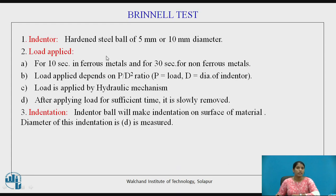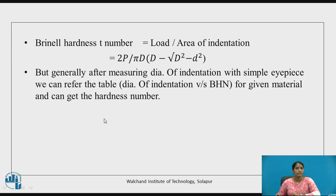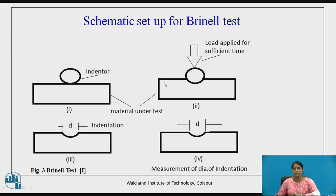In Brinell's hardness test, the indenter is a steel ball of 5 mm to 10 mm diameter. The load is applied for 10 seconds for ferrous materials and for 30 seconds for non-ferrous materials. The load to be applied is calculated by the P/D² ratio, where P is the load and D is the diameter of the indenter. The Brinell hardness number is calculated as load upon area of indentation. This is the schematic setup showing the indenter, the material to be tested, and the mark of indentation.